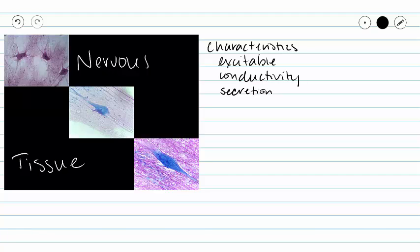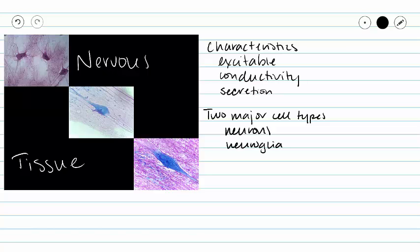Now in our nervous tissue we are going to have two major cell types. We see neurons and neuroglia. Sometimes neuroglia are called glial cells.